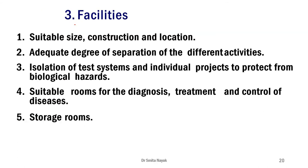The third principle is facilities. The testing facility should be of suitable size, construction and location. Different testing activities must be separated from each other; test systems and chemicals that are hazardous, toxic, or flammable should be isolated from each other. There should be suitable rooms for diagnosis, treatment and control of diseases, so testing personnel suffering from any illness should be treated appropriately and not exposed to chemicals being tested. There should be well-ventilated and clean storage rooms for all samples and testing materials.